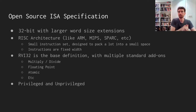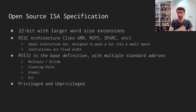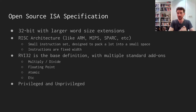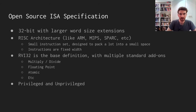RISC-V has an unprivileged and a privileged specification. An unprivileged set of instructions is basically bare metal — you just run whatever code you want on the chip. In a privileged system, that's when you have a breakdown of what user code can do versus what kernel-level code can do. And that's how you can implement things like Linux — you need those privilege levels in place.